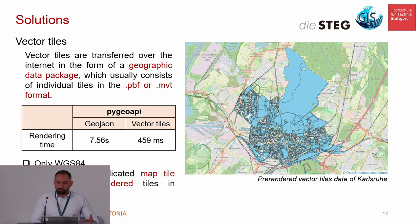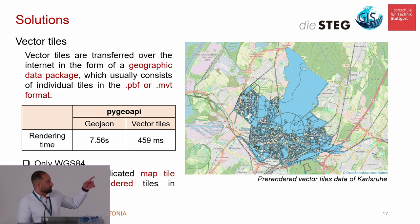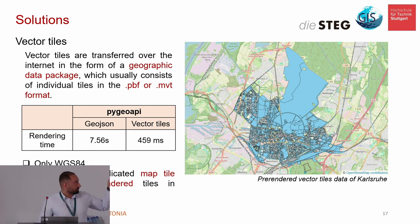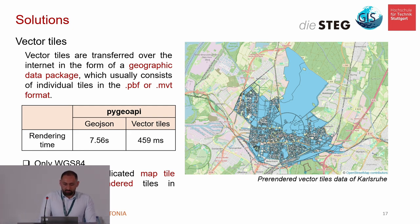Our solution to increase the rendering speed of PyGeoAPI is to use vector tiles. As shown in the table, using GeoJSON takes around eight seconds, but switching to vector tiles brings it to less than one second. We also recommend using WGS84 and requesting from a dedicated map tile server or pre-rendered tiles on localhost.